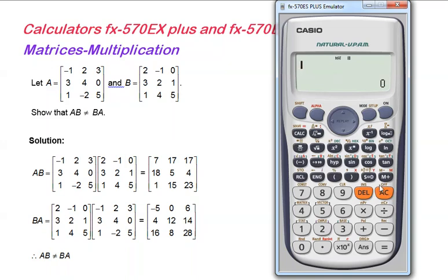Now we can use SHIFT 4 to call out matrix A and B. We're going to check the result of matrix B times matrix A. Let's start with matrix B, press 4. And then press SHIFT 4 again to call out matrix A, press 3. This is matrix B times matrix A. Press equal.